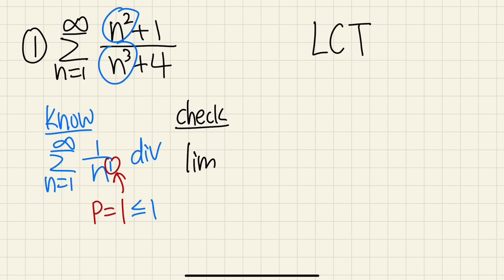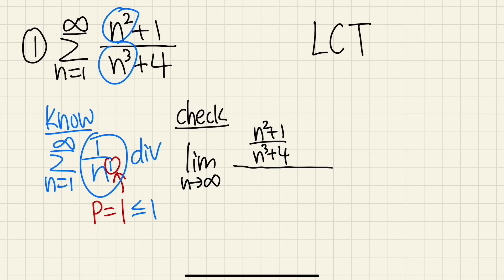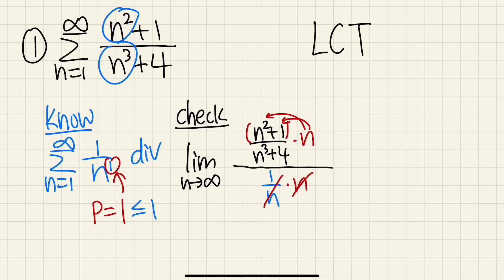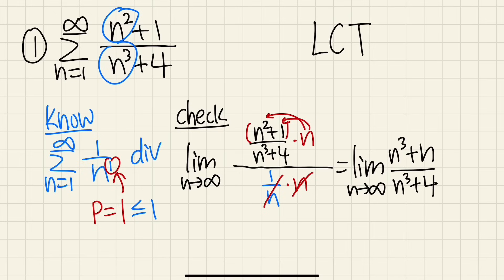So we are going to use the limit comparison test. We check the limit as n goes to infinity — put down this expression on the top (the one we are trying to find out) and the one we know on the bottom. Multiply n on top and bottom and distribute: we get the limit as n goes to infinity of (n³ + n) over (n³ + 4). Comparing the highest powers on top and bottom, the limit equals 1.